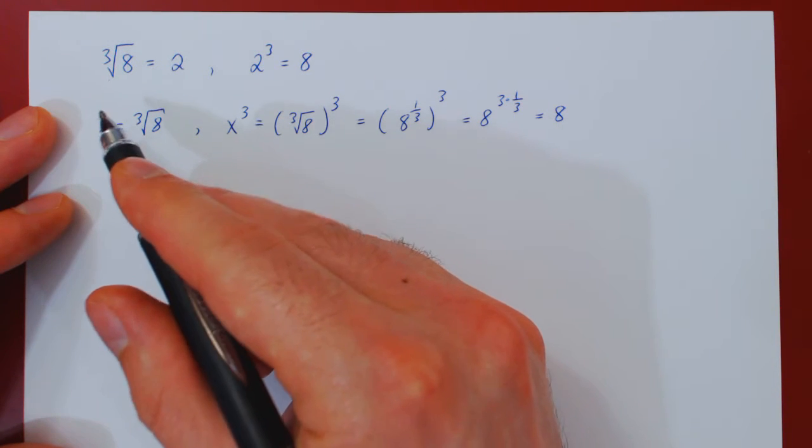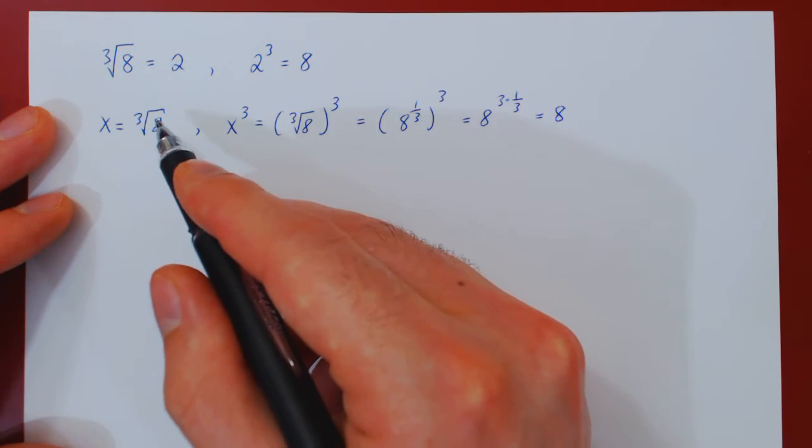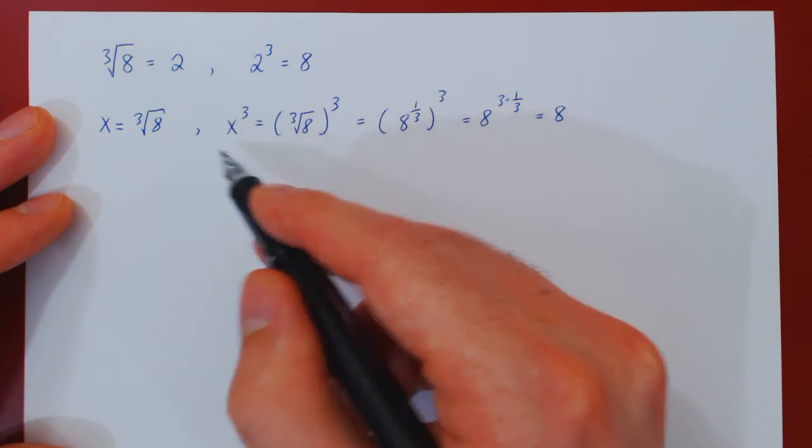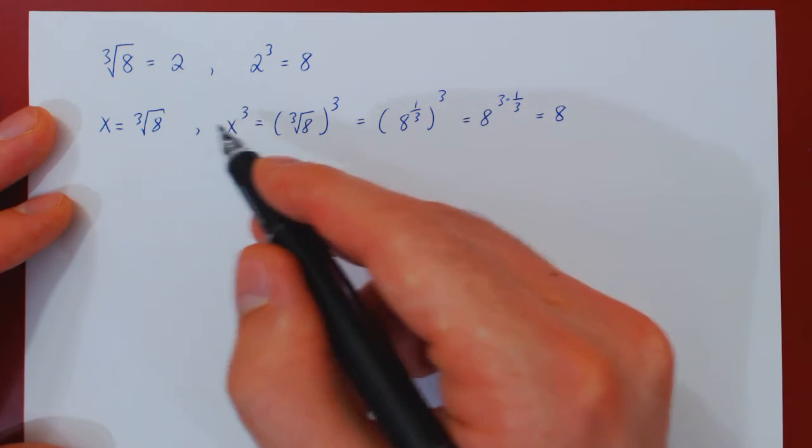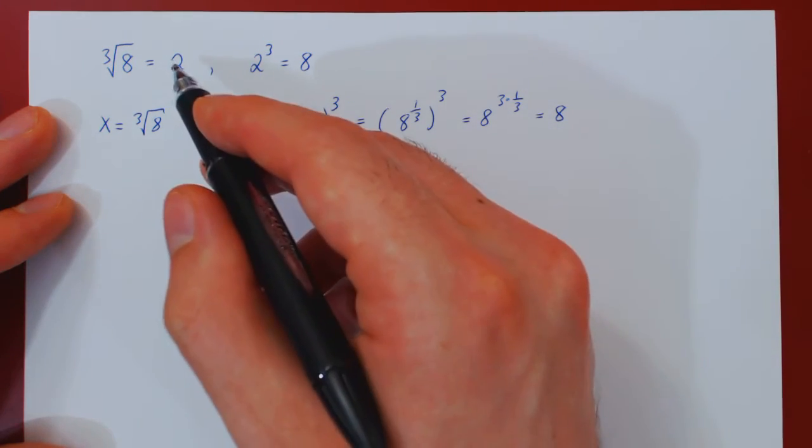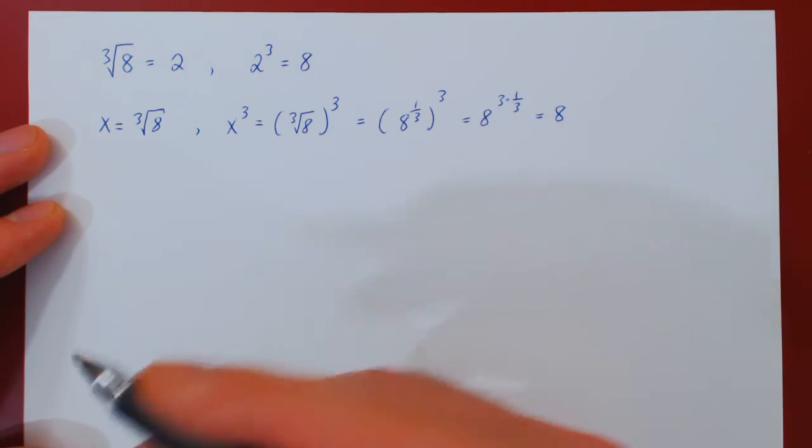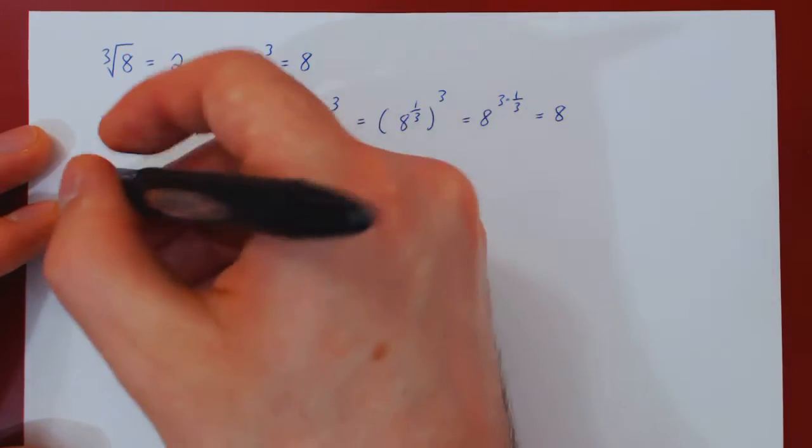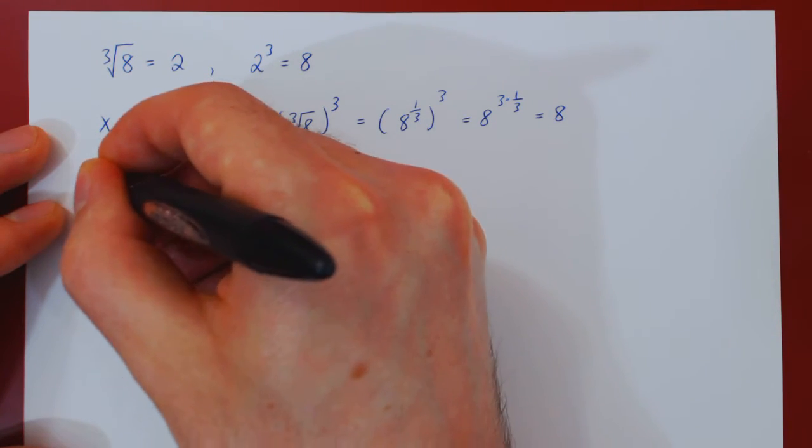So you see that if x is the cube root of 8, then x cubed must be 8. Therefore, if x cubed is 8, well, x must be 2. And here's how we will think of it in our next few examples.